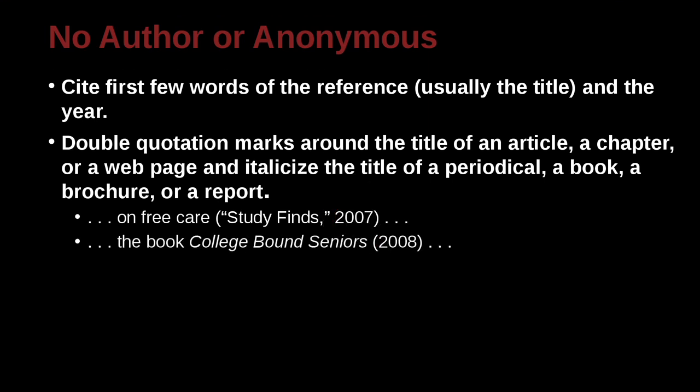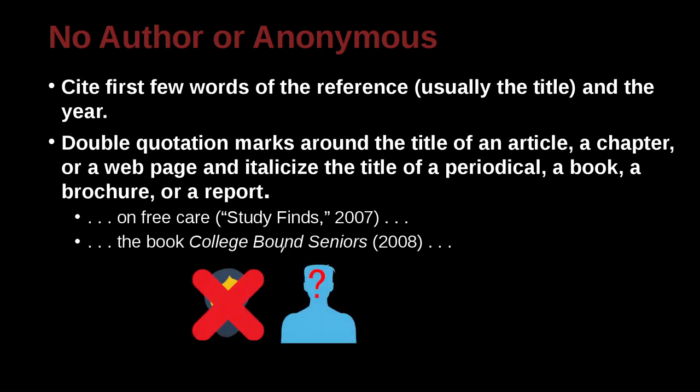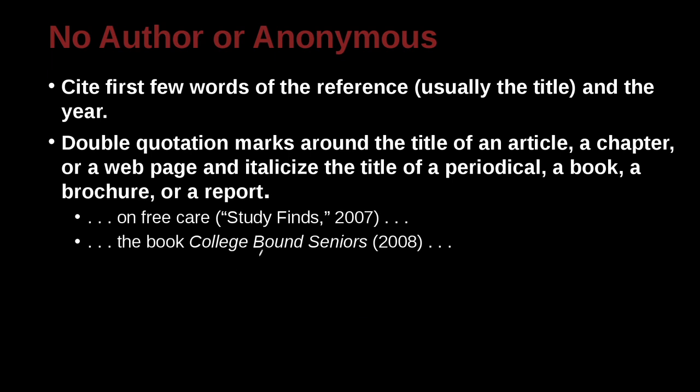In this next example, we can see the book College Bound Seniors 2008. Again, we should use the author of the book, but we don't have the author because it's anonymous, no author. So what do we do? We go ahead and use the first few words in the reference, which would be the name of the book. And it is a book, so we go ahead and we can italicize it.